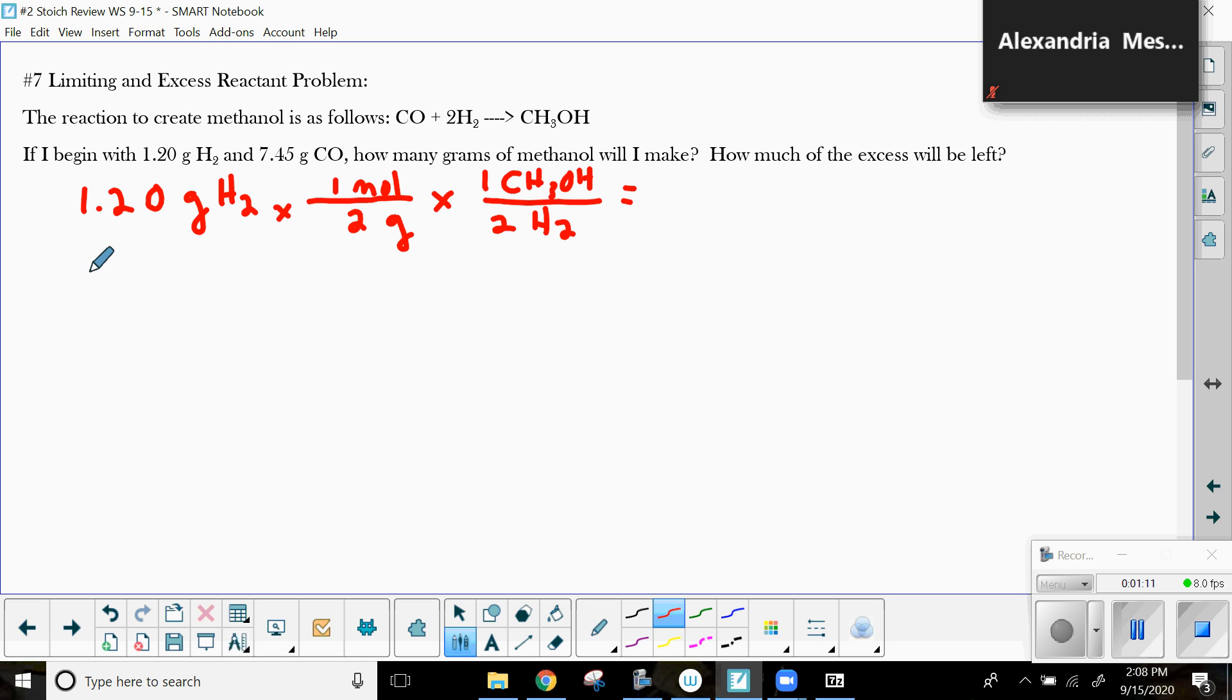Then I'm going to go 7.45 grams of CO, and times that by 1 mole is going to be, 12 plus 16 is 28 grams. Looking at my periodic table. And there's 1 methanol to every 1 mole of carbon monoxide. So I stop right there, and do some figuring.